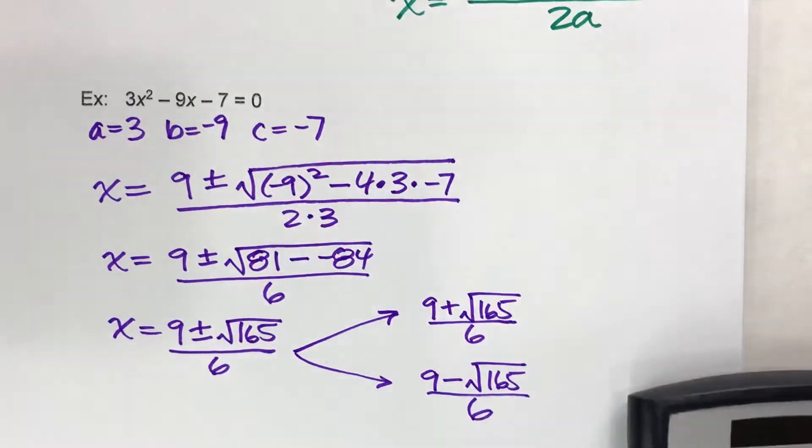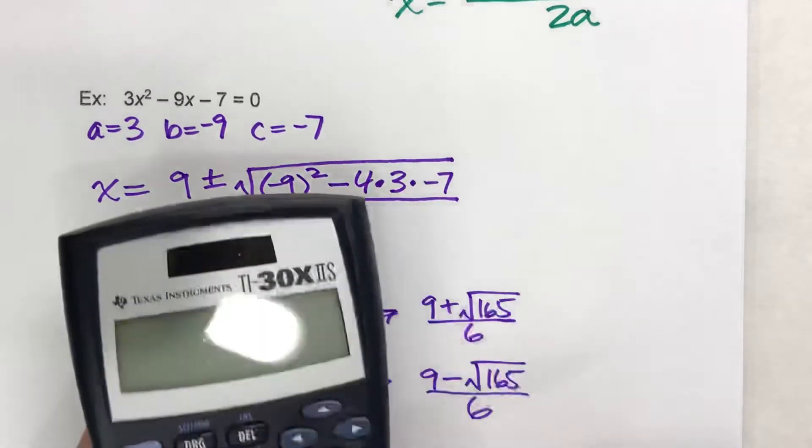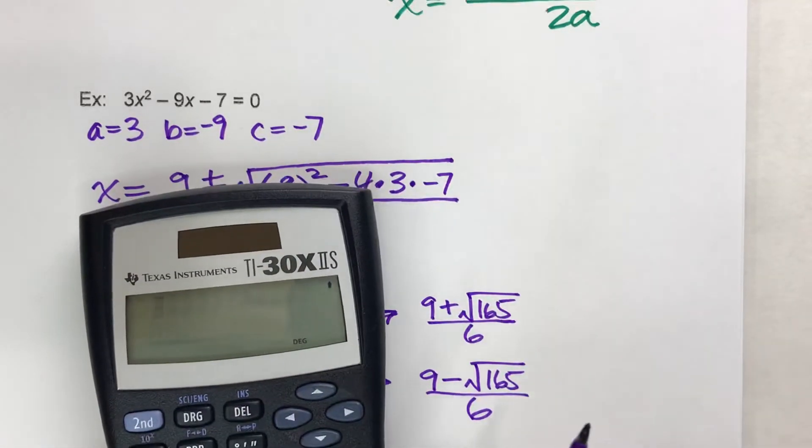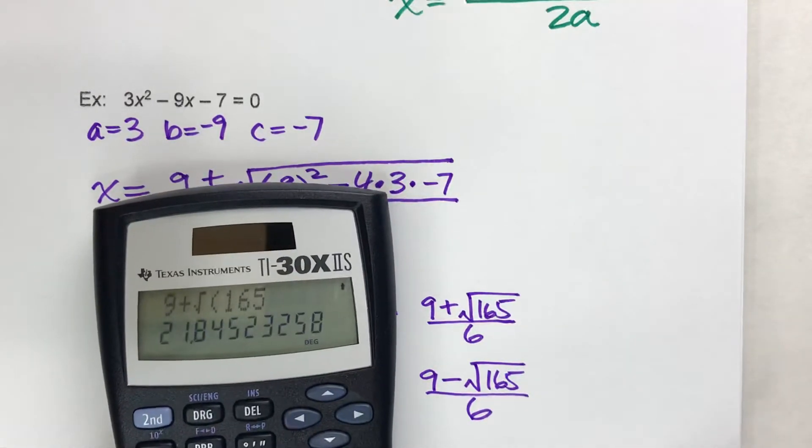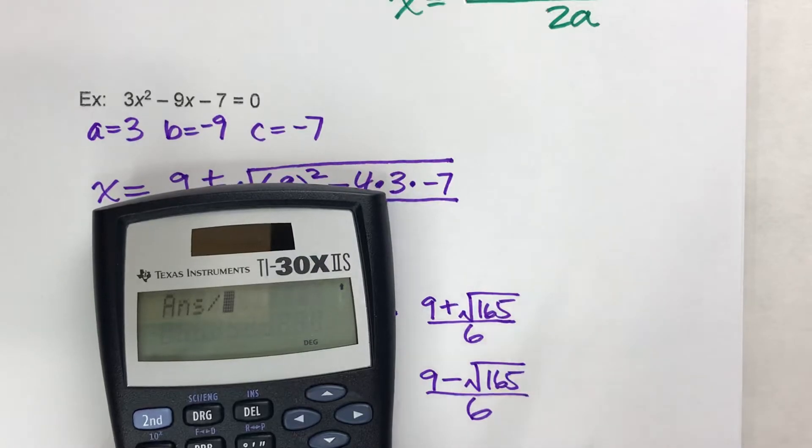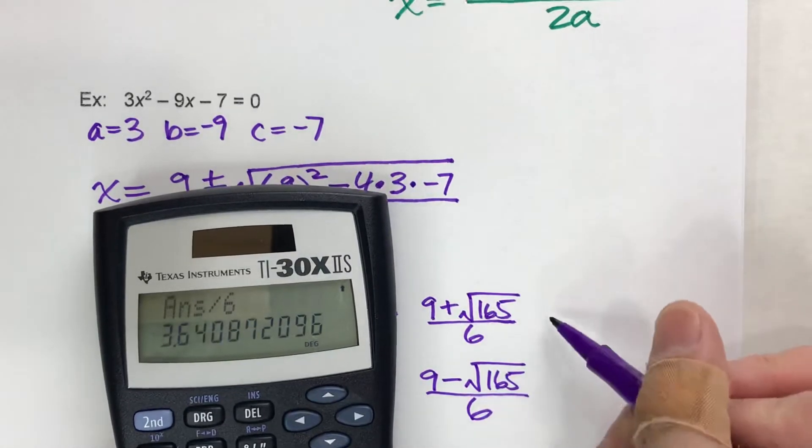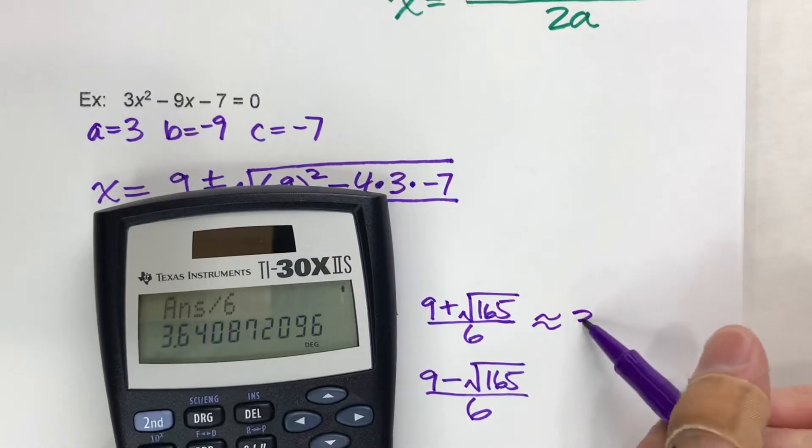So, let's use our calculator and get this. 9 plus the square root of 165 is this. And then I'm going to divide that whole thing by 6. And I get about 3.6.